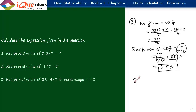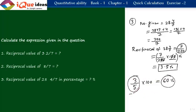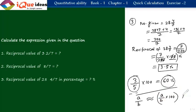To illustrate: 3/5 as a percentage is 3/5 into 100 equals 60 percent. So any fraction A/B converted to percentage equals A/B into 100 percent. Just memorize that every fraction, when converted to a percentage, must be multiplied by 100.